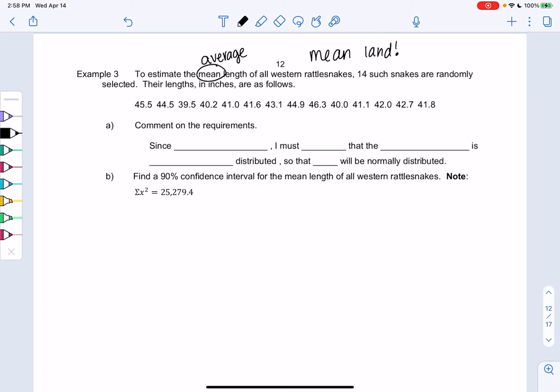So to estimate the mean of all rattlesnakes, we take a sample of 14 such rattlesnakes, and we recorded their lengths below. So before we start, let's comment on the requirements. So my sample size is only 14.